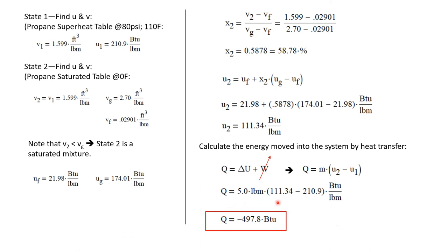So Q is equal to the mass, which is five pounds mass, times U2 minus U1, which we got these values from the previous exploration. And we calculate a heat transfer of negative 497.8 BTUs. So we know that Q is positive when energy is transferred into the system. Negative simply means that energy is transferred out of the system, which it would indicate a cooling process, as we had said.